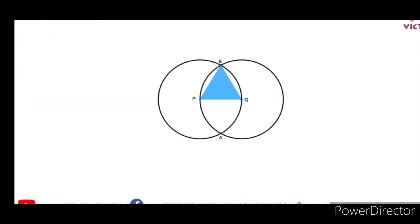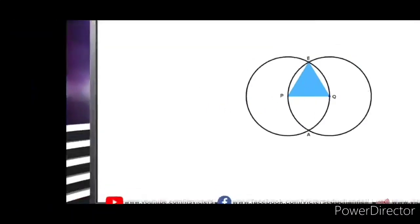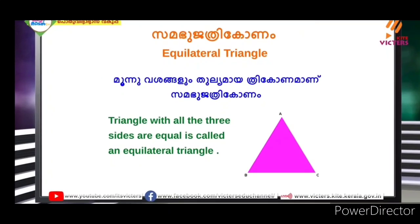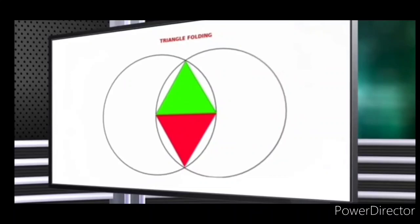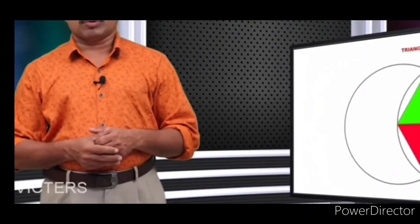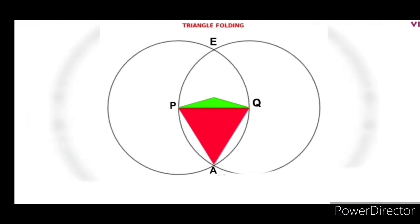This is a triangle with all three sides equal — an equilateral triangle. We have the triangle folding: the green triangle and the red triangle. The two triangles are equal.